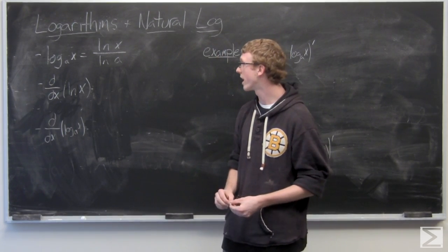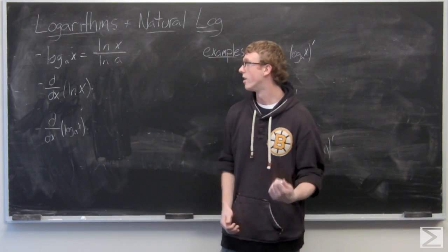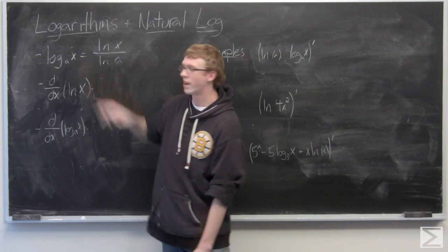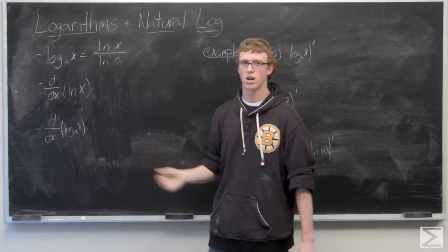Now the first thing we want to look at here is the change of base formula for a normal logarithm. A normal logarithm base a of x is going to equal natural log of x over natural log of a.